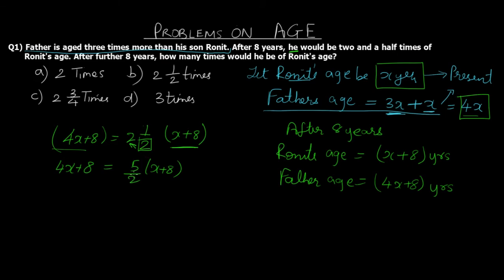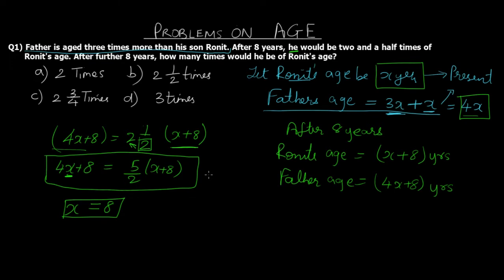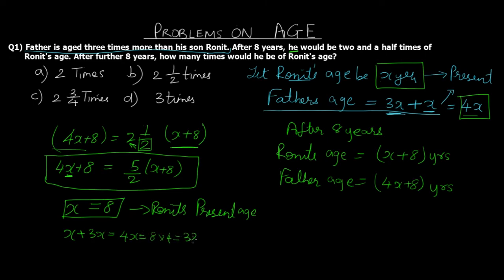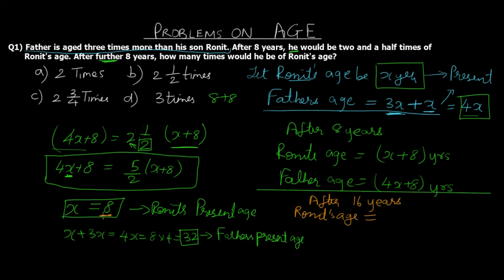Simplifying this equation, we get x equals 8. This x is Ronit's present age. Father's present age is 4x, which equals 4 into 8, giving us 32. So their present ages are 8 and 32. However, what is asked is after a further eight years — meaning a total of 16 years from now. After 16 years, Ronit's age would be 8 plus 16, which is 24, and his father's age will be 32 plus 16, which is 48.